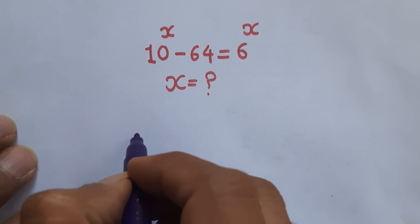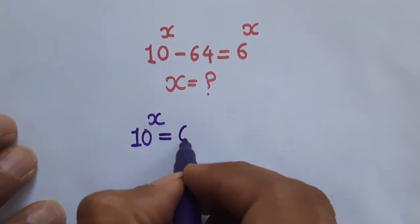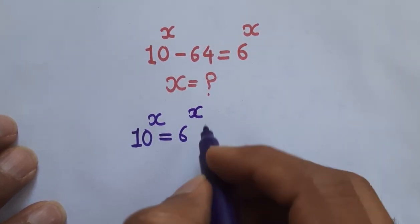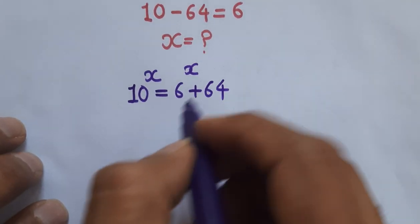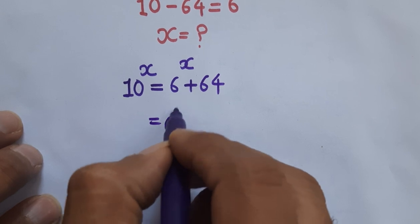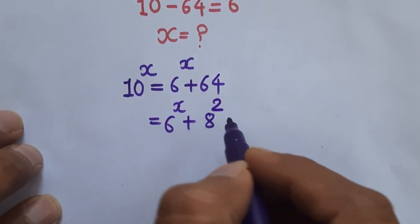So here given is 10 power x. Now we will take this 64 on the right hand side. So is equal to 6 power x plus 64. So now we know that 64 is 8 power 2.